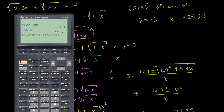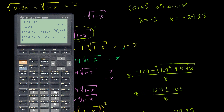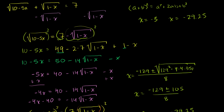Now let's try x equals negative 29.25. We take the square root of 10 minus 5 times negative 29.25, plus the square root of 1 minus negative 29.25 — and that equals 18, not 7. This didn't work. That's because we squared twice and lost information. Negative 29.25 is an extraneous solution. The only valid solution to this equation is x equals negative 3.